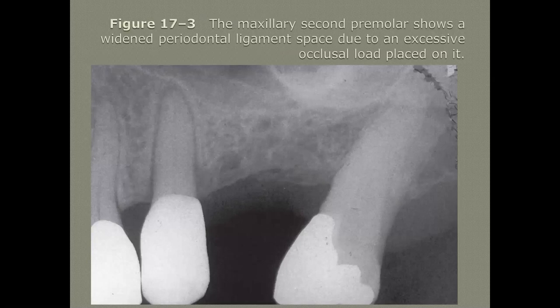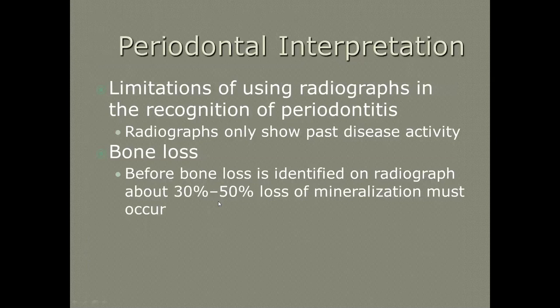This radiograph shows no bone loss, but with the way the premolar is tipped it looks like there might be. This is a maxillary second premolar showing a widened PDL, indicating some sort of occlusal discrepancy. You can see the widened PDL along the entire tooth and also on the first premolar. Some limitations of radiographic interpretation: it only shows us past degree of disease activity, and you need that 30 to 50% loss of mineralization for it to show up — that's always a test question.